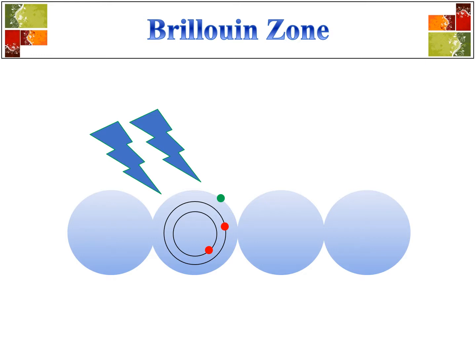When X-ray falls on these electrons, all of them absorb energy but in different quantities. Certain electrons, shown in green, absorb the energy and give back the same energy. While certain electrons, shown in red, absorb a fraction of the original energy and start lattice vibration. I have tried to visualize this in the following slides.